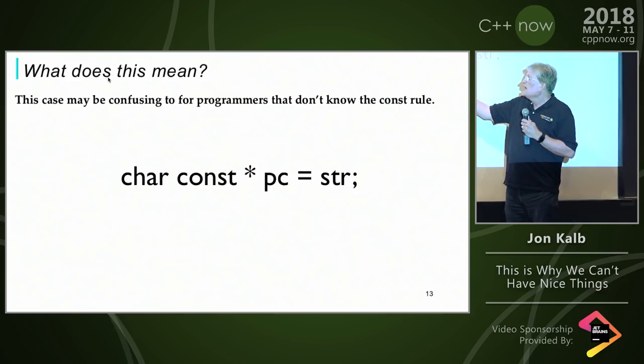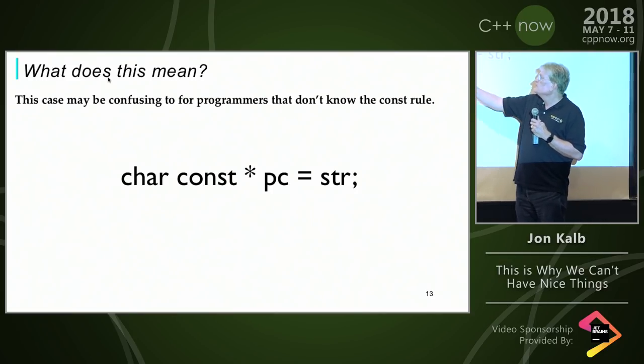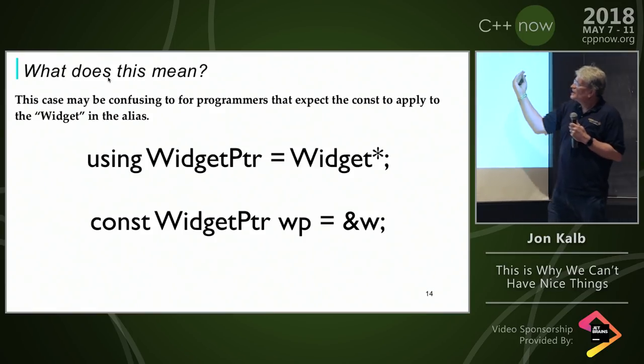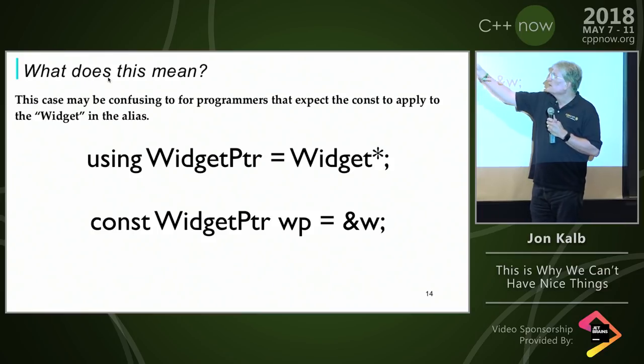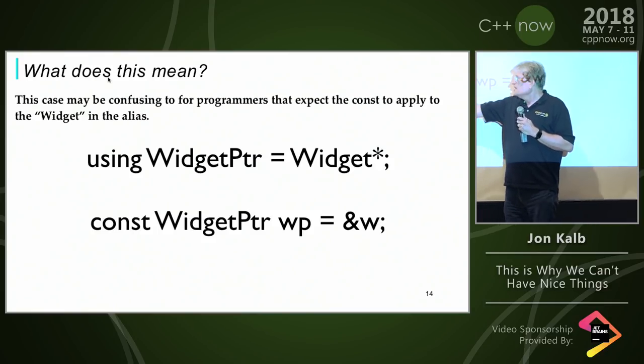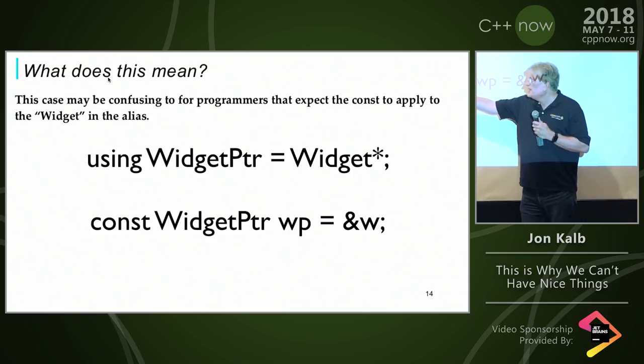There may be situations if you're not using East const consistently, you might be confused by things. If you ever saw this and you were not using East const, you might be confused. Is it the pointer that's const or is it the character that's const? And when we have a common type alias, in this case we're making a type alias for a widget pointer, if you're consistently not using East const, you might write something like this, being confused.